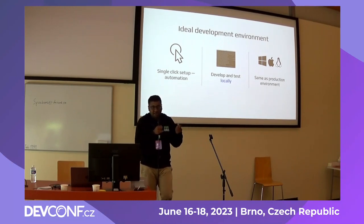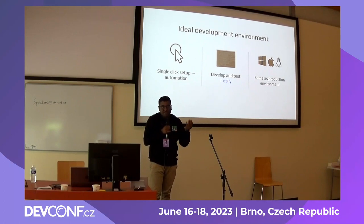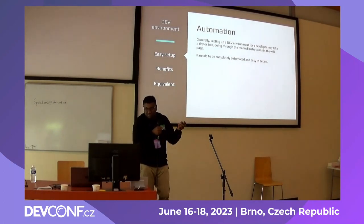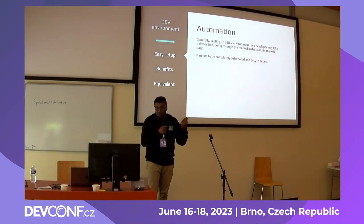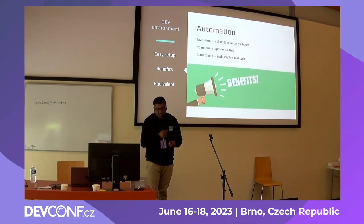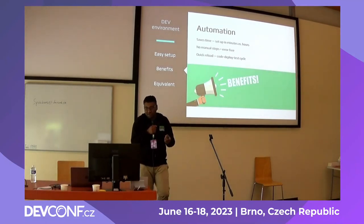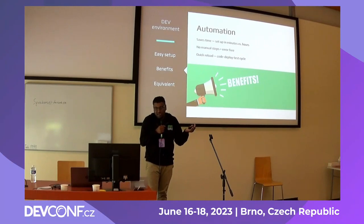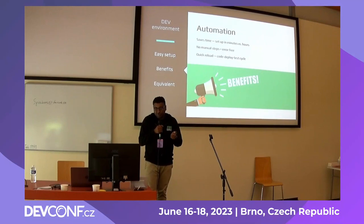A development environment should be a single-click automation, able to develop and test locally, and equivalent to the production environment. Previously it took a couple of days to set up a dev environment; with automation you can do it in 15 to 20 minutes. Automation saves time and resources, implies error-free setup, and lets you quickly reload changes locally.